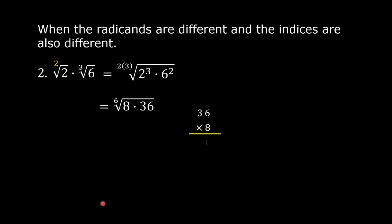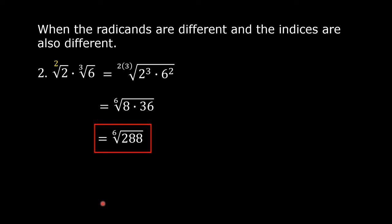Then 36 times 8: 6 times 8 is 48, carry the 4; 8 times 3 is 24, plus 4 is 28. So this equals the 6th root of 288.